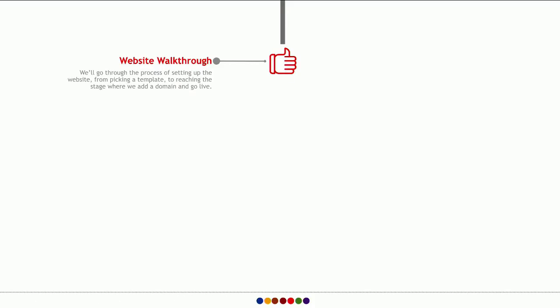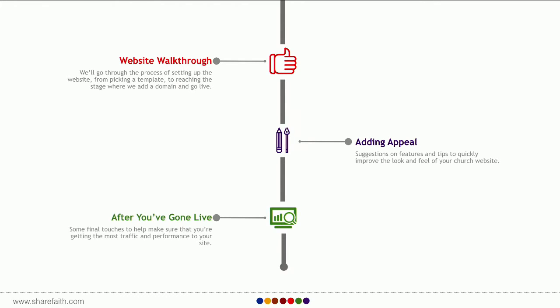Once we talk about preparation, we're going to go over the necessities every church website should have. And then I'm going to do a walkthrough with you guys so you really get to see some of the stages and process of getting your website put together. After that, we'll talk about different things you can do to add appeal to your site — design options, features that don't necessarily need to be there right from the start but will add functionality and get more traction from your site.